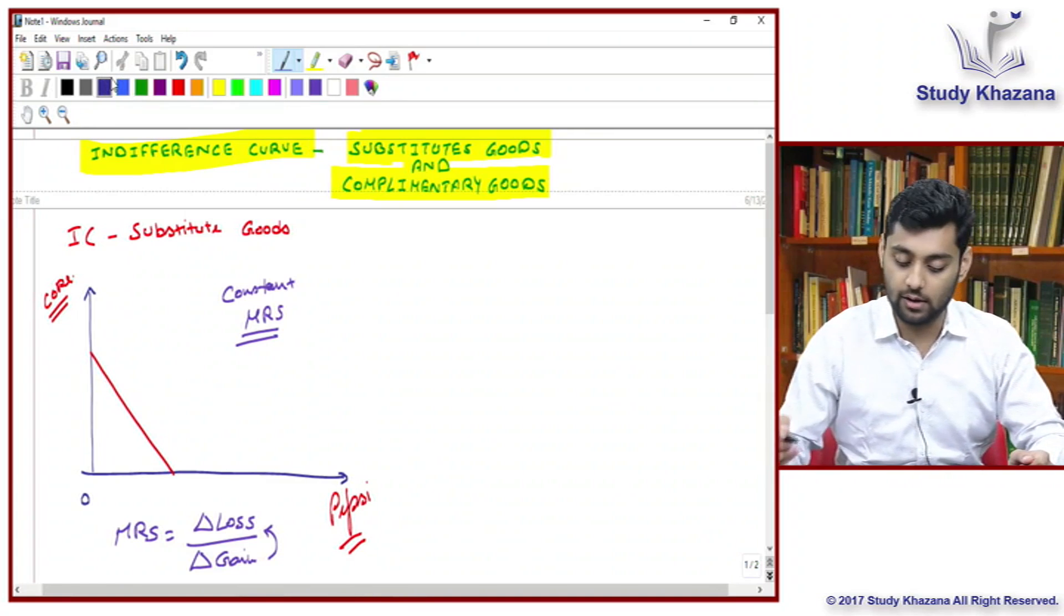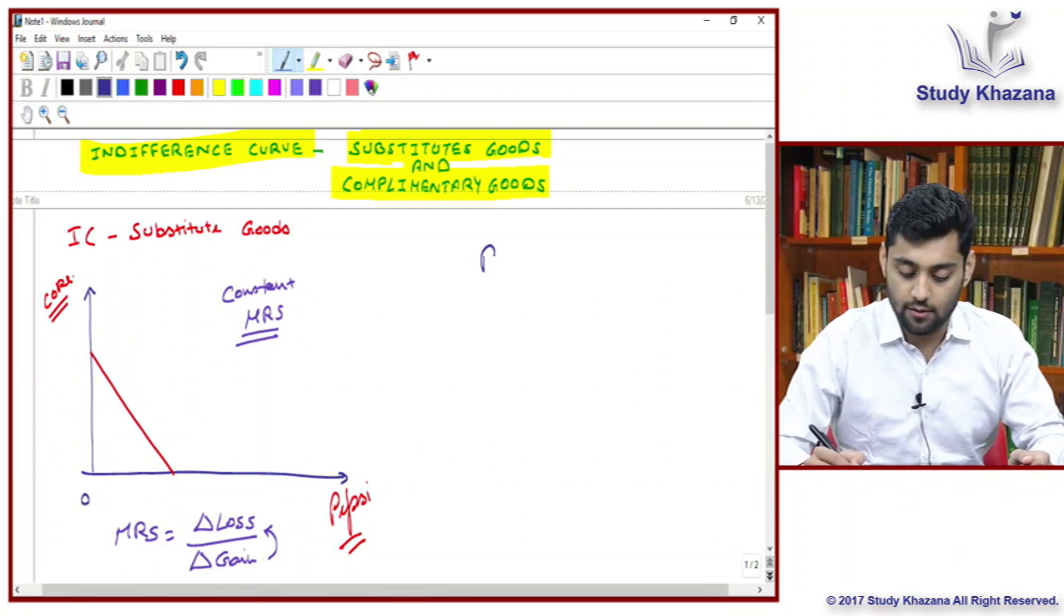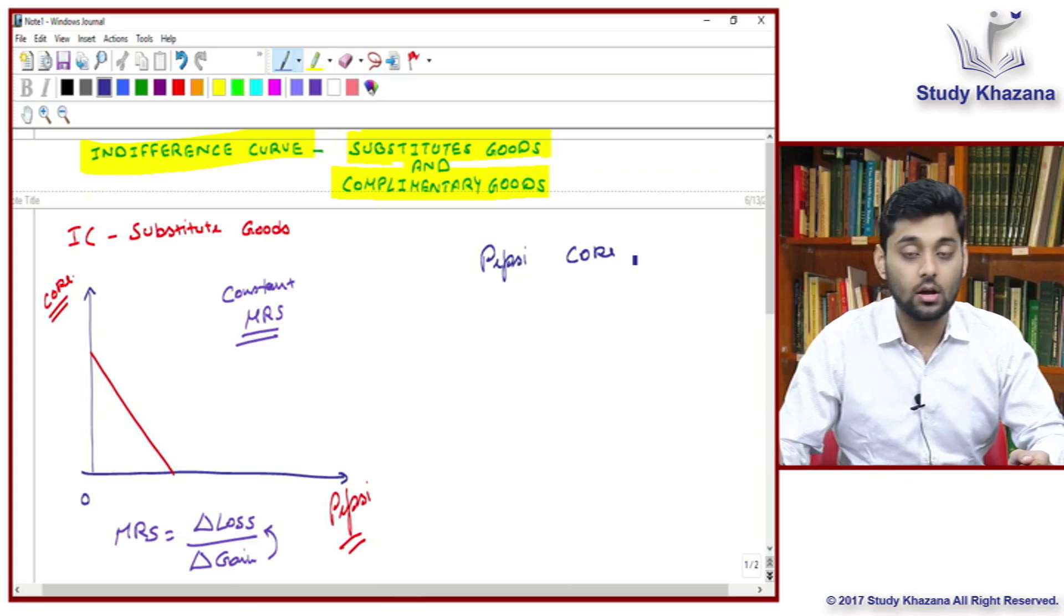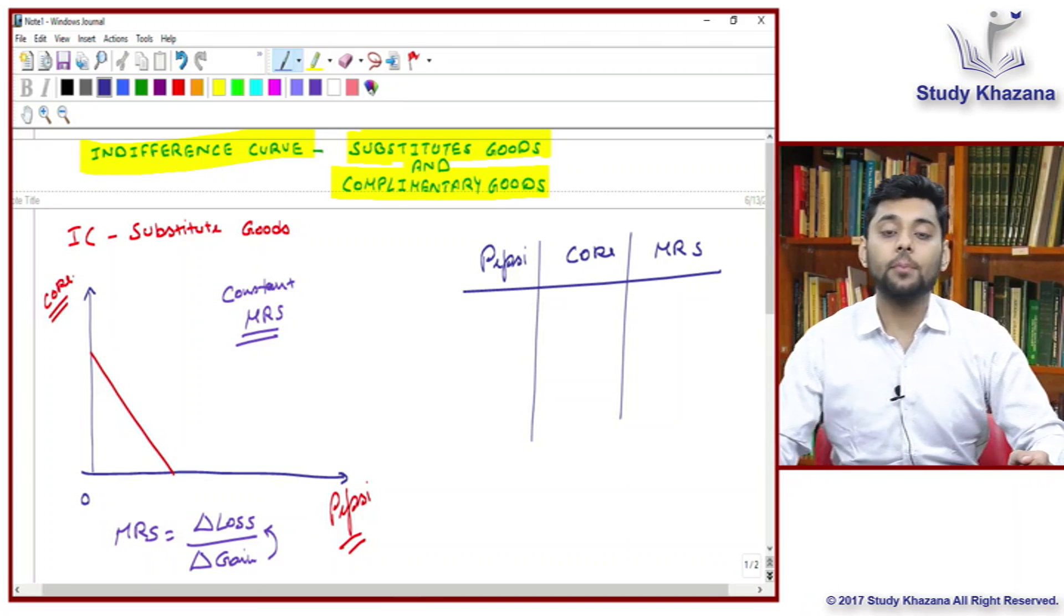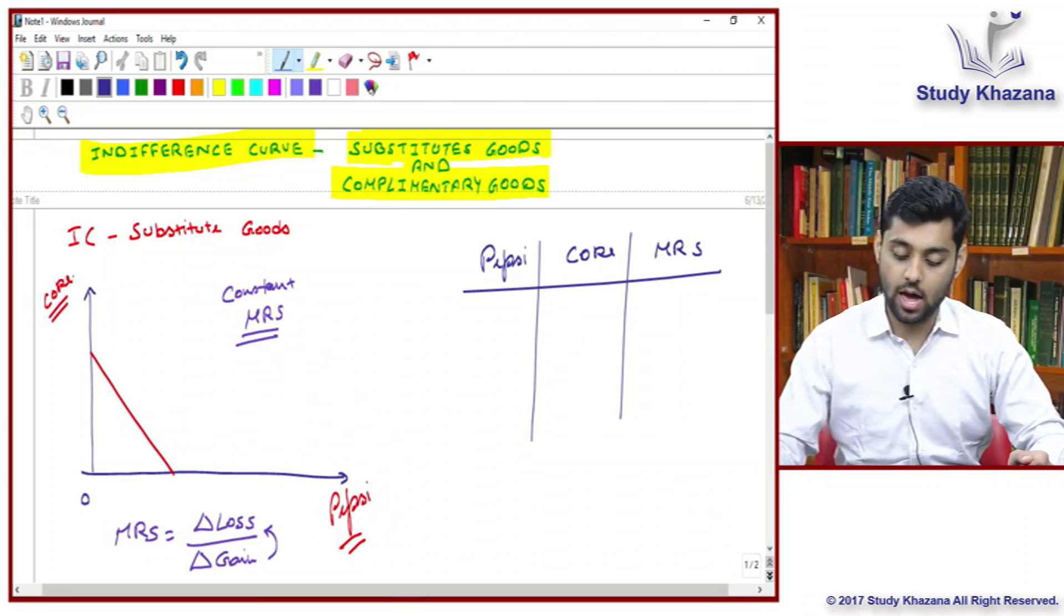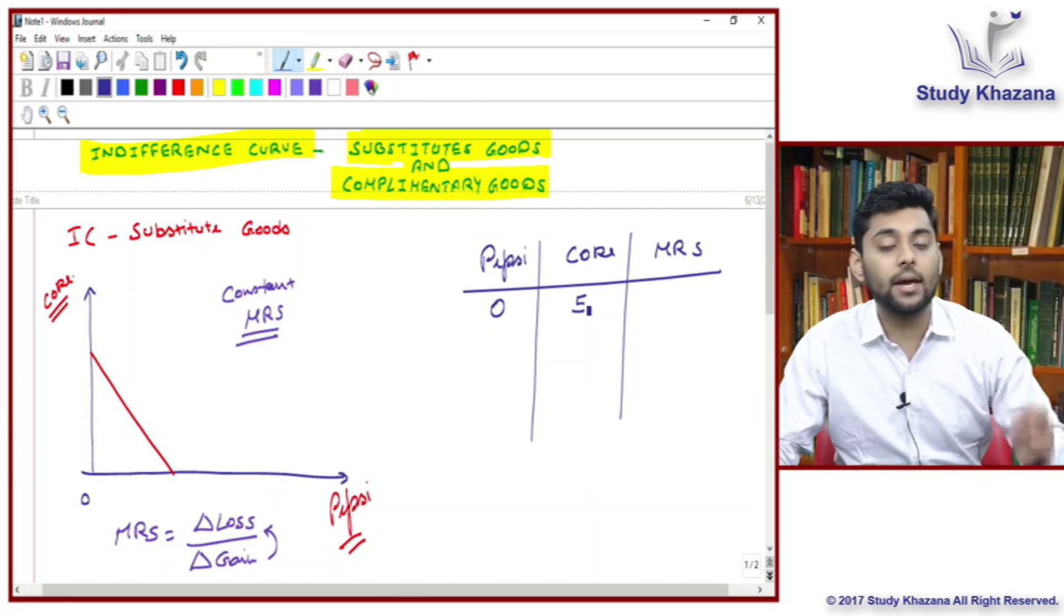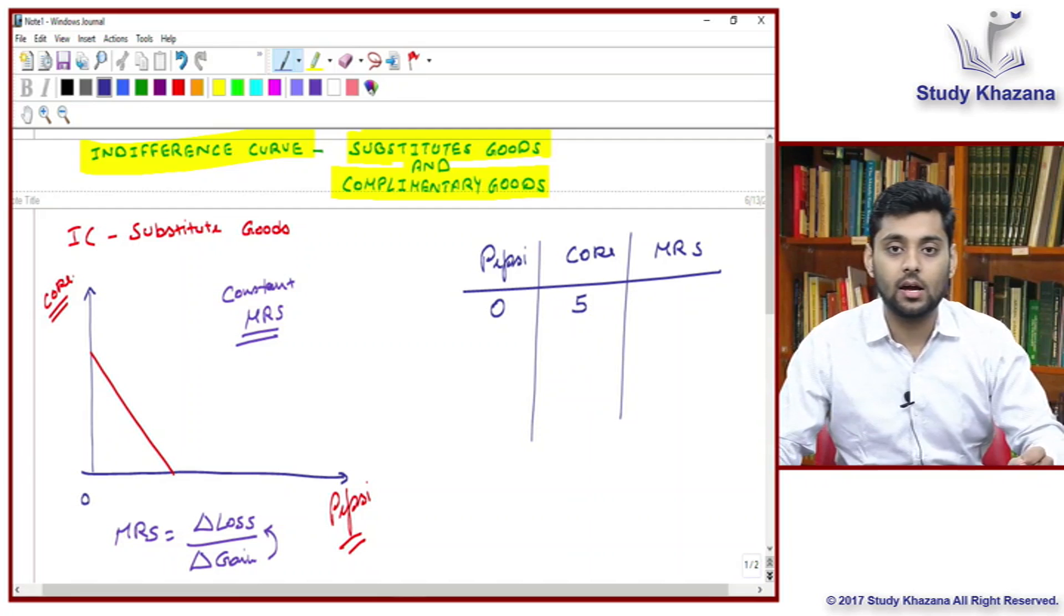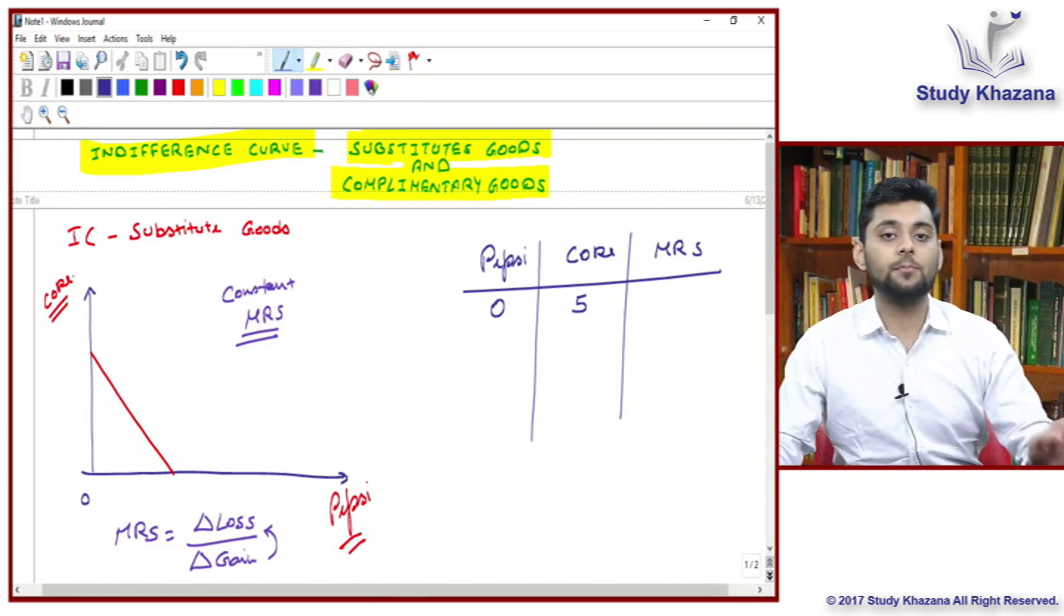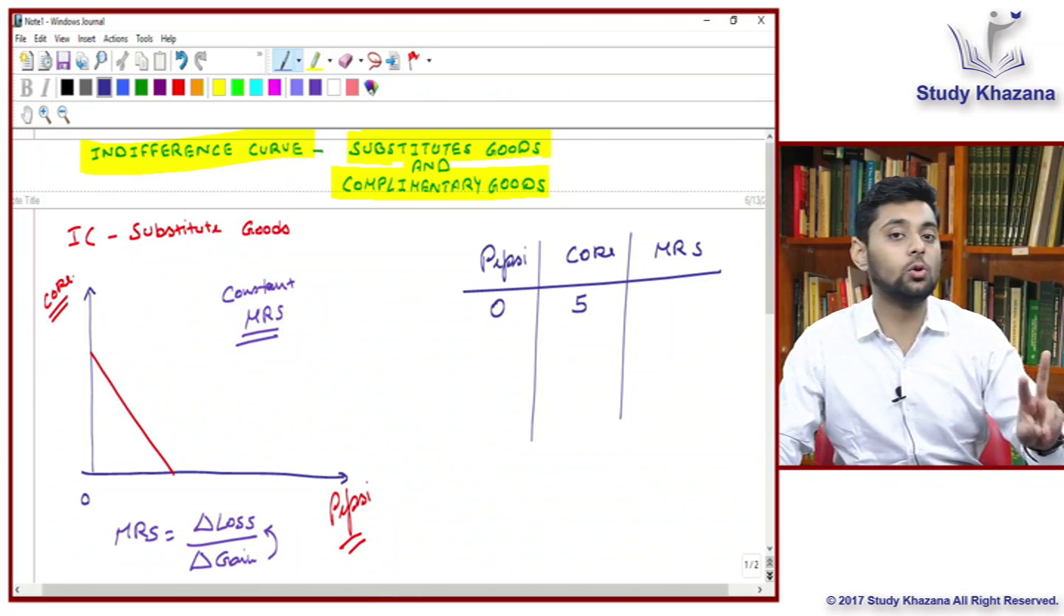I'm going to prepare a schedule here. Again, you have two goods, Pepsi and Coke. Let's say at this point of time you have zero Pepsi and five Coke. I'm taking a small example of you and your friend.